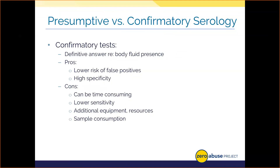Let's talk about confirmatory tests. If we have a positive result from a presumptive test and have plenty of sample, we will engage in a confirmatory test whenever possible. Note that some body fluids do not have confirmatory tests available. These tests simply verify the presence of a body fluid or tissue. Confirmatory tests have a lower risk of false positives and are very specific for a given body fluid target, making them an ideal follow-up. Confirming a body fluid gives you that informative detail as to what body fluid was present, helping give context to a piece of evidence.